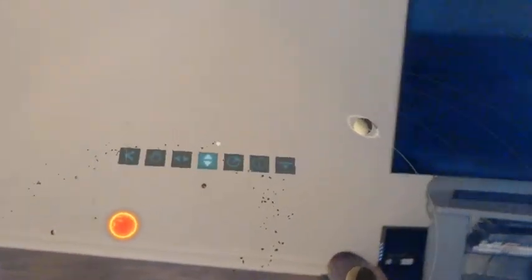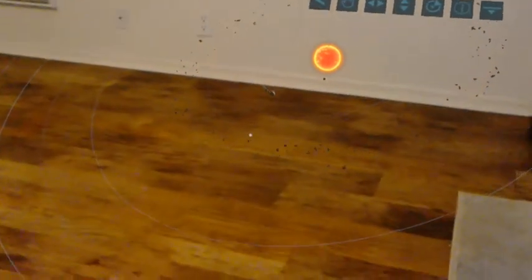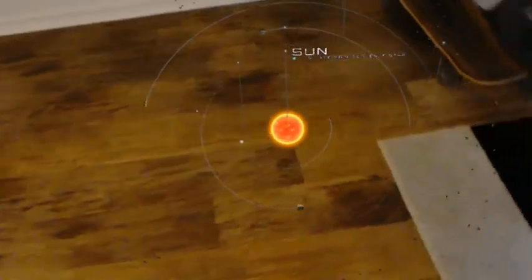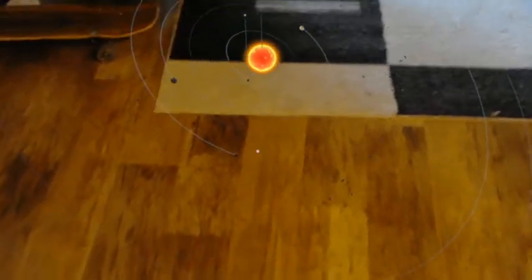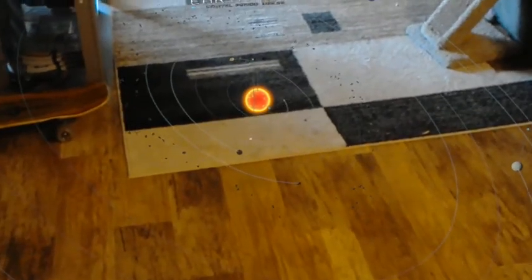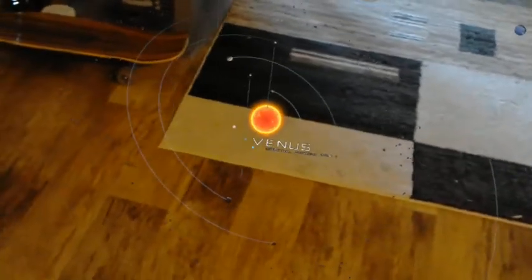Our solar system. This familiar representation of our solar system simplifies sizes and distances so that the sun and all of the planets can be easily seen at once. Click the view button above the sun to toggle between this and a more realistic view.